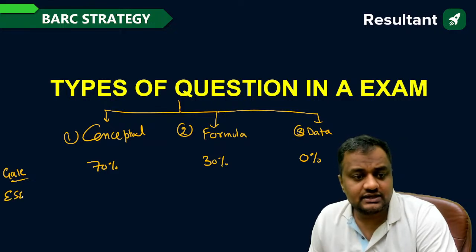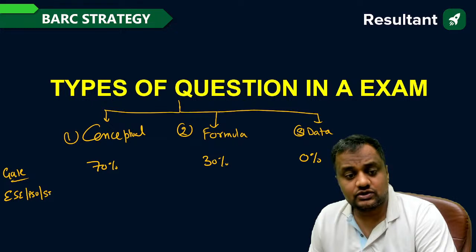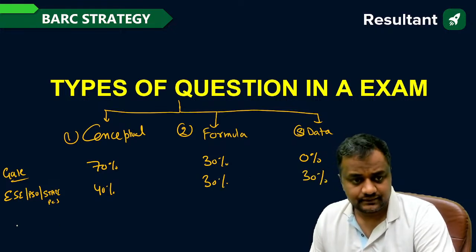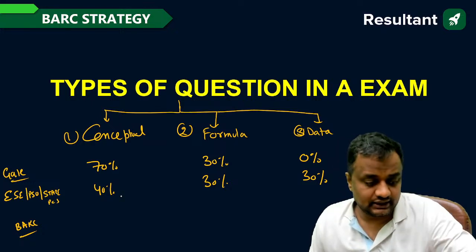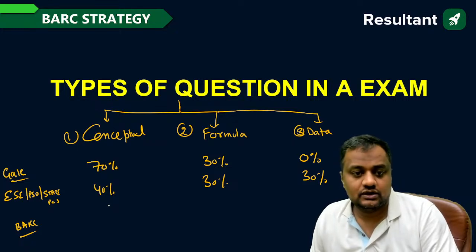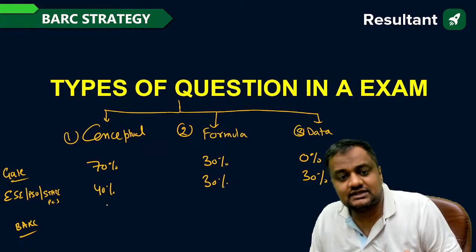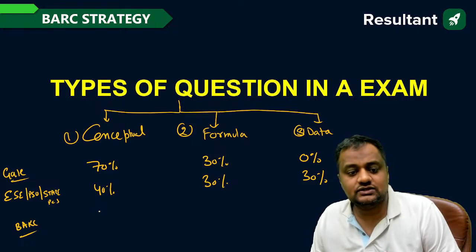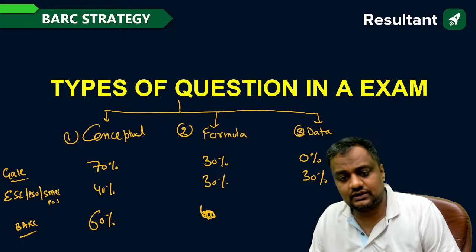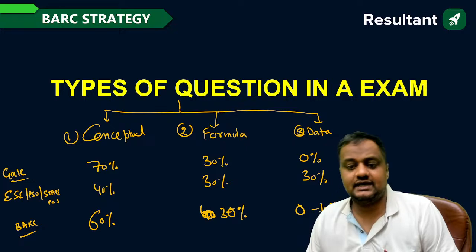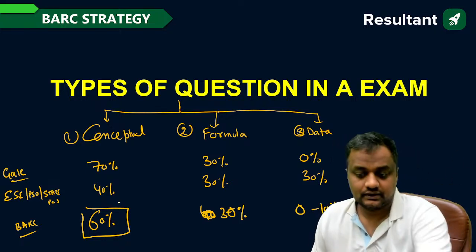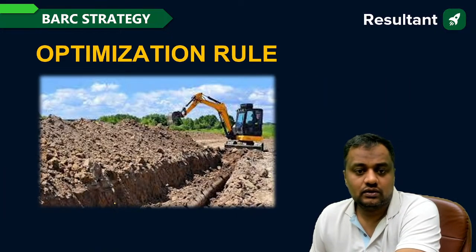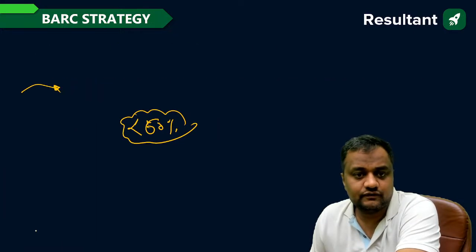For engineering services, PSUs like BHEL and HPCL, and state PCS exams, the split is roughly 40 percent conceptual, 30 percent formula-based, and 30 percent data-based. For BARC, the most in-depth conceptual questions after GATE come here. You can expect around 60 percent conceptual, 30–40 percent formula-based, and 0–10 percent data-based. That is why the cutoff is as low as 100–120 out of 300.